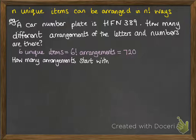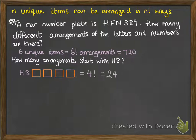Now just going one step on from that: how many different arrangements start with H8? So we fix in that H8, that means we've got four spaces left to fill with four unique items left. That would be four factorial. So there would be 24 different arrangements that start with H8, because we fixed those in place first and then looked at how the rest of the four items could be arranged after that.